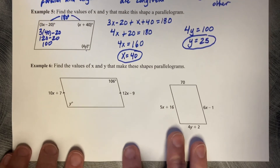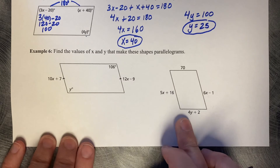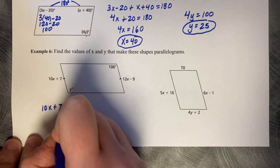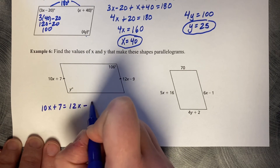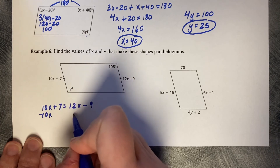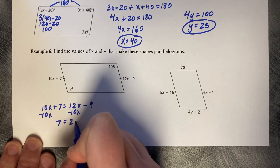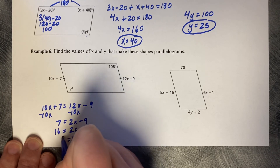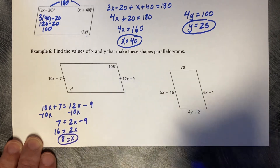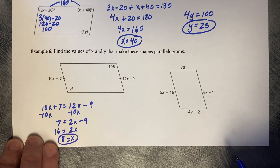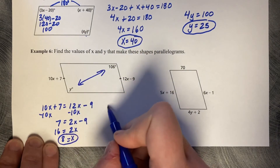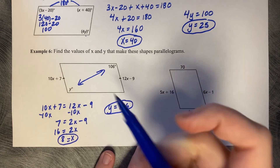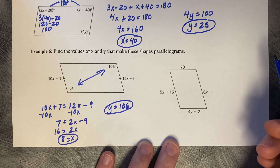Pause this video and try the next two examples on your own. For the next example, x equals 10 — didn't even need to do any math for y. y equals 106 because opposite angles are congruent.